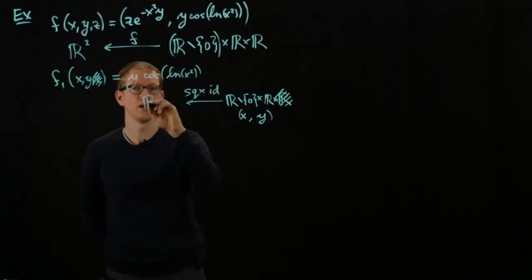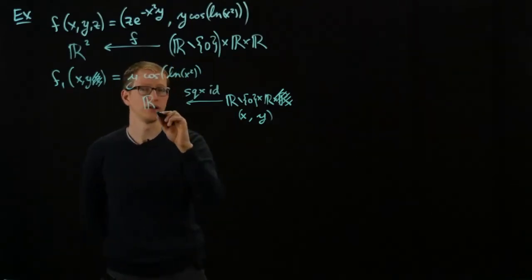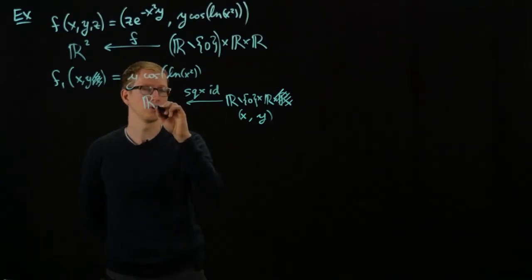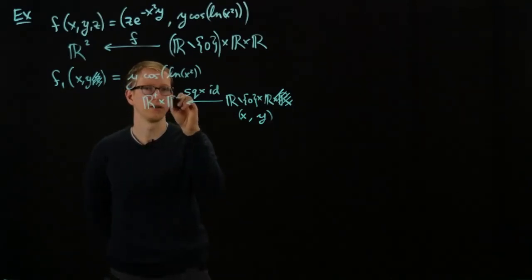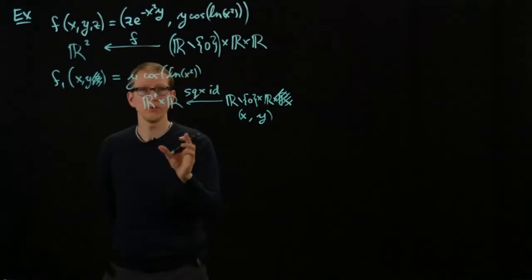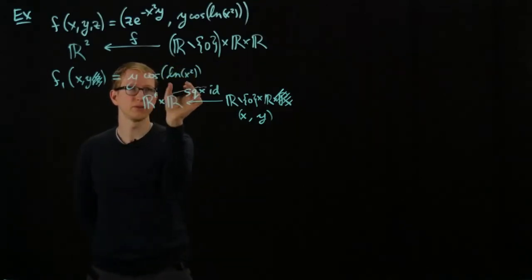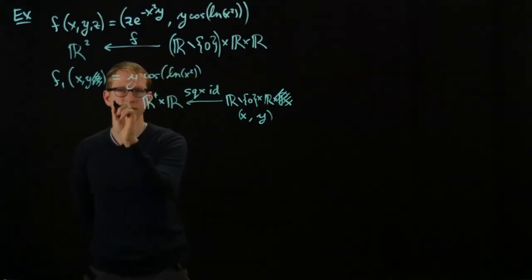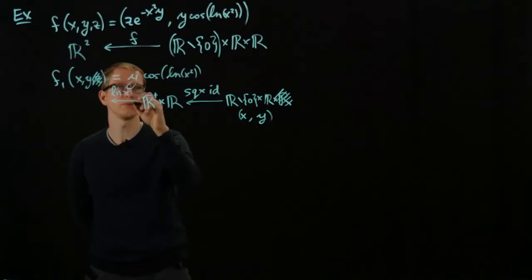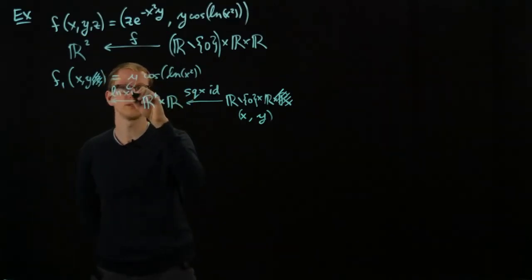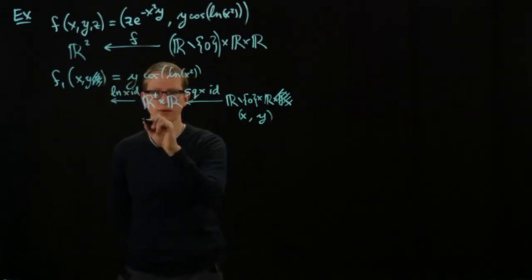We land in R minus 0, or just the positive real numbers, cross R. Now, dealing with positive numbers, the logarithm function makes sense. So we apply the logarithm to the first coordinate and leave the second coordinate still fixed. When we square x we get (x², y), and then the logarithm is a function whose codomain is R, taking positive and negative values as well. This gets sent to (ln(x²), y).